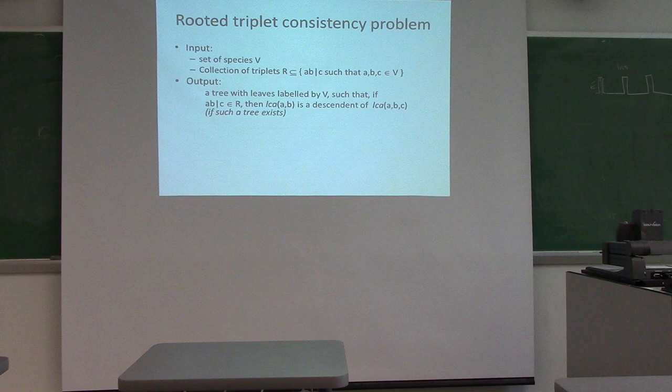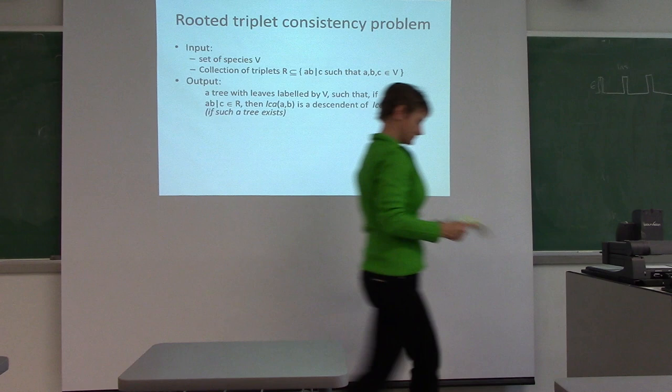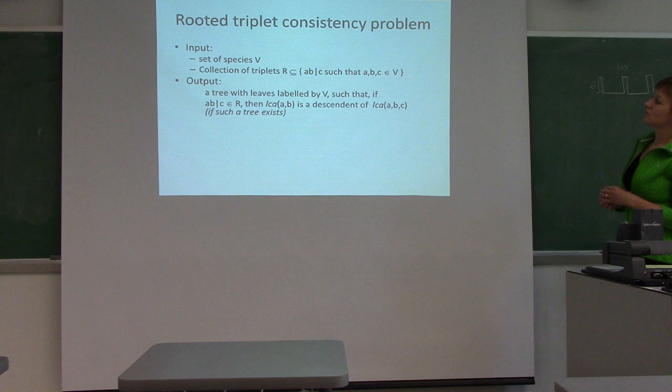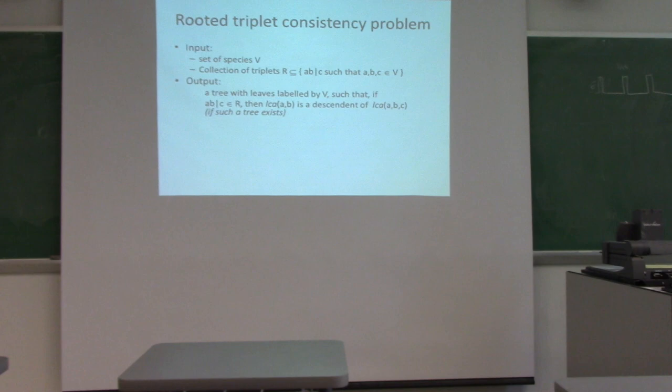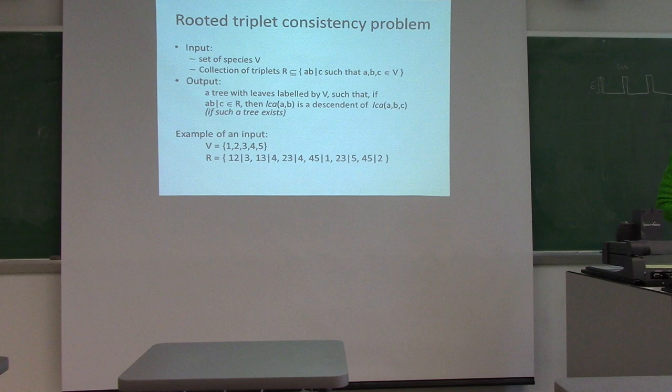What we'd like to do is find a tree such that we can label all the leaves by V, and if our input R tells us that AB should be closer than C, then that is also true in our tree — the least common ancestor of A and B is a descendant of the least common ancestor of the three of them.